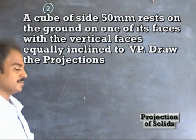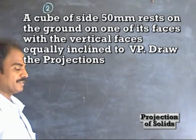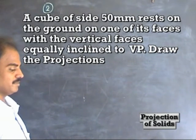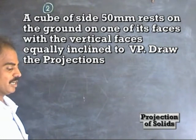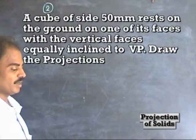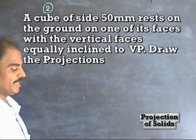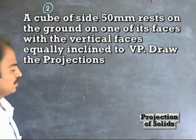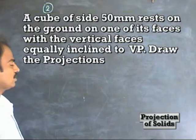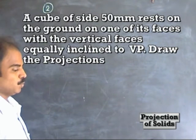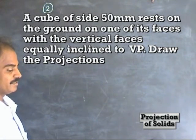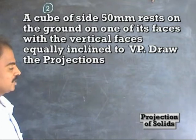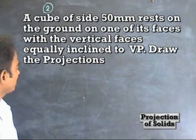Second problem: a cube of side 50 mm rests on the ground on one of its faces with the vertical faces equally inclined to VP. So, let us draw a cube with its vertical faces equally inclined to VP.